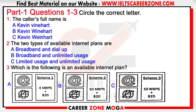We have three schemes in the unlimited category. In scheme one, you get 4 Mbps of speed. In scheme two, you get 10 Mbps of speed. And in scheme three, you get 20 Mbps of speed. And how much do these cost? Scheme one will cost you $15 per month, scheme two $20 per month, and scheme three $25 per month.